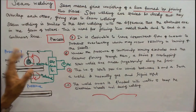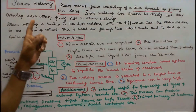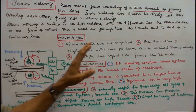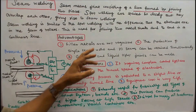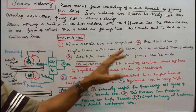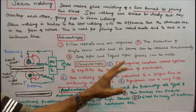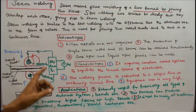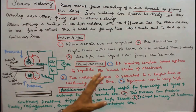This is the process of seam welding. Now we see the advantages, disadvantages, and applications of seam welding. Advantages: Number 1 — filler metals are not required. Number 2 — single seam welds and parallel seams can be obtained simultaneously. Number 3 — gas tight and liquid tight joints can be made. Disadvantages: Number 1 — it requires a complex control system to regulate the travel speed of electrodes. Number 2 — the welding process is restricted to a straight line or uniformly curved line. Number 3 — equipment cost is very high.